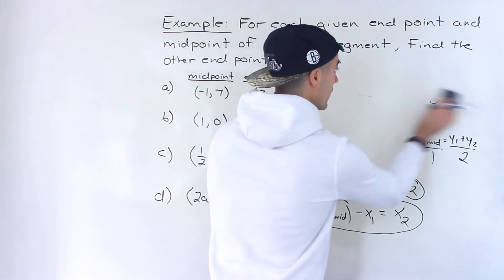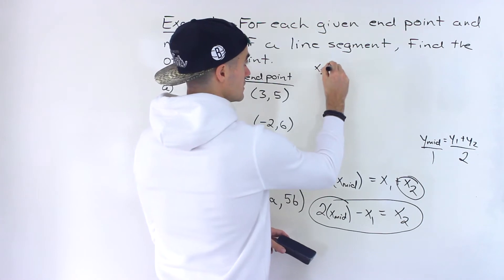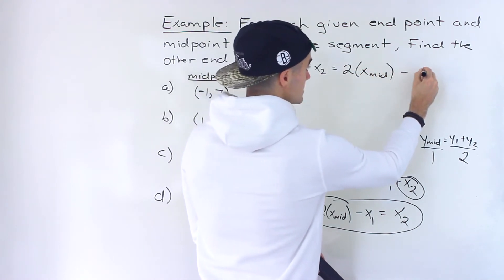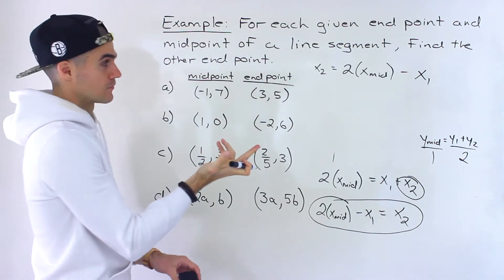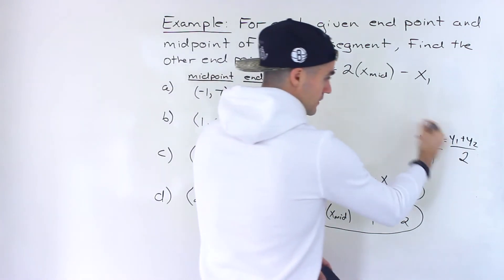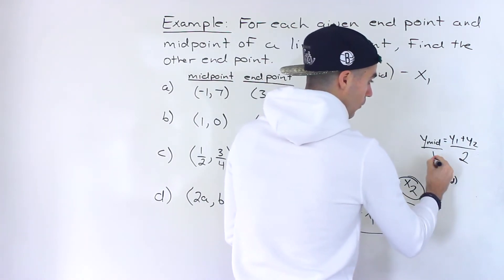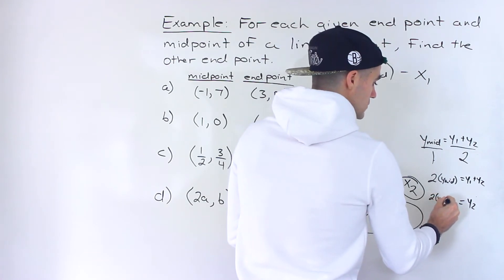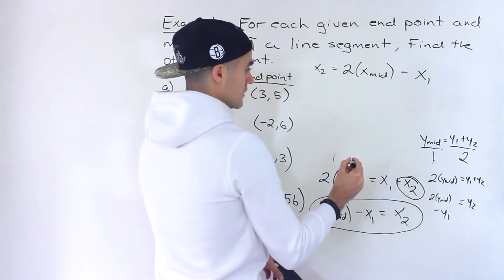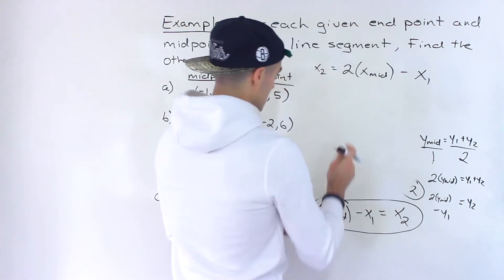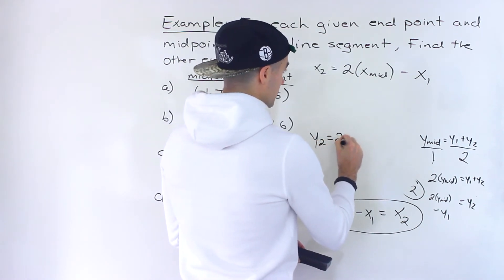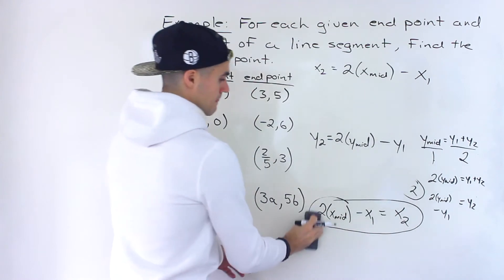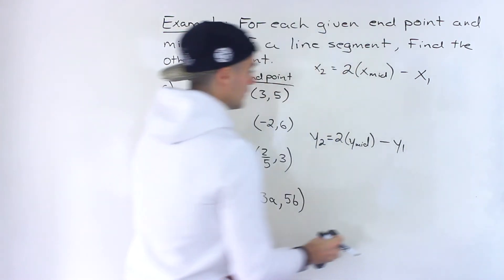So the formula is: x2, the x-value of the endpoint we're solving for, equals two times the x-value of the midpoint minus the x-value of the given endpoint. Doing the same thing for y: y2 equals two times the y-value of the midpoint minus y1. I'll write that formula up here to give myself room to work through all the parts.